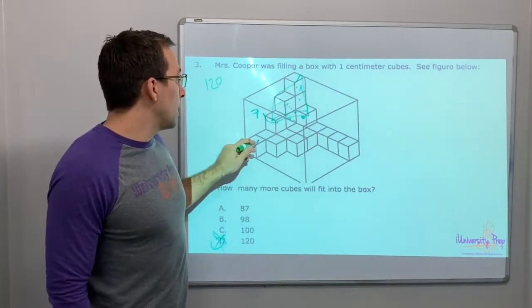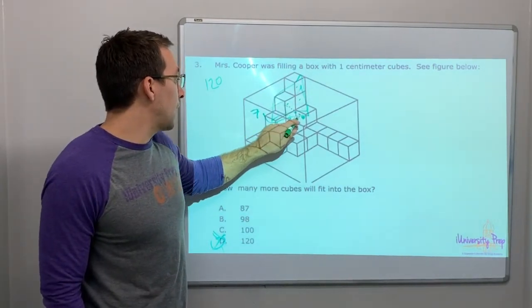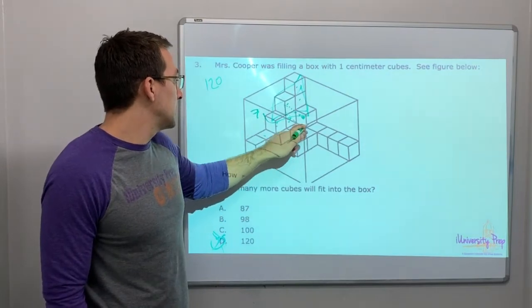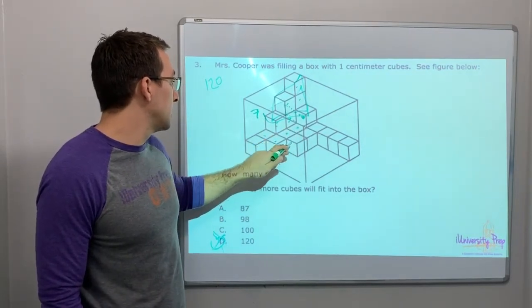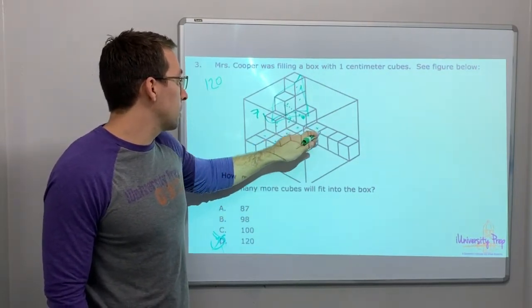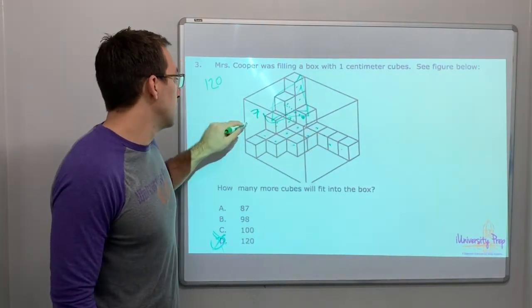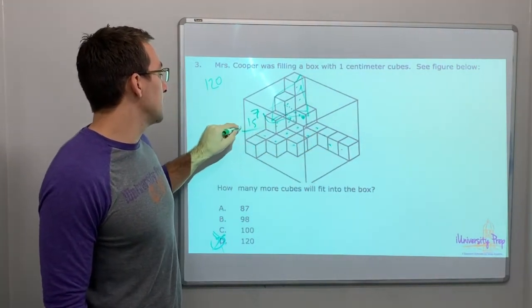Okay. One, two, three, four, five, six, seven, eight, nine, ten, eleven, twelve, thirteen, fourteen, fifteen. So seven plus fifteen is twenty-two.